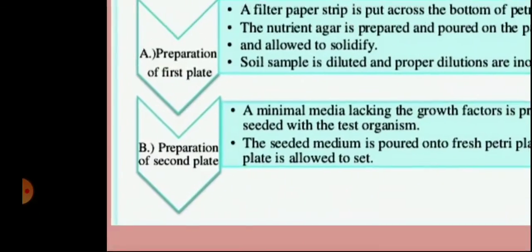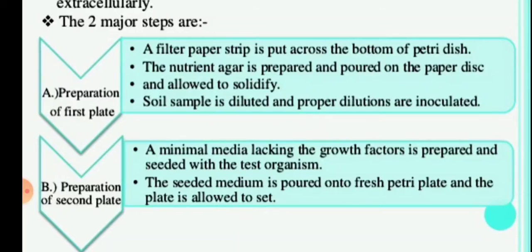The procedure involves two steps using two plates. In the first plate, a filter paper strip is placed across the bottom of a petri dish, then nutrient agar is poured on the paper and allowed to solidify. A serial dilution of the soil sample is prepared and inoculated into this plate, so the medium is inoculated with soil microorganisms.